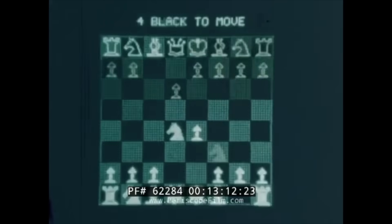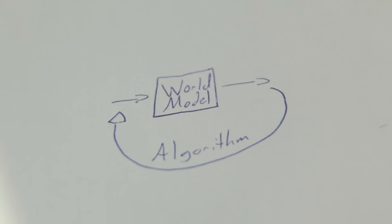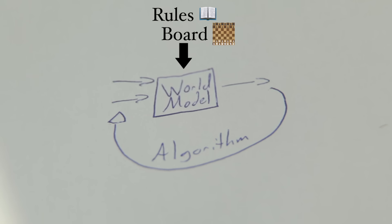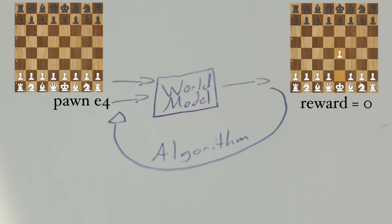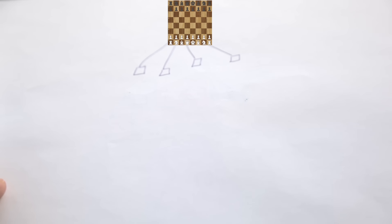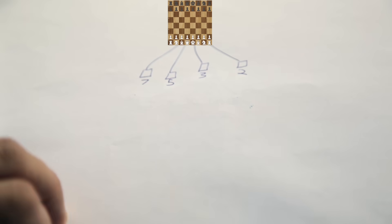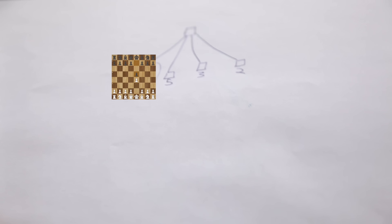Let's use computer chess as an example. The world model is simple — it's defined by the rules of chess plus a description of the board. You can provide it the position of all the pieces and a next proposed move, and it outputs a new board state and any resulting points earned or lost by each player. The algorithm tells you how to make moves. A simple chess algorithm would look ahead at each possible next move using the world model, check the value of the resulting board, and then make the move with the best value, known as a greedy approach.